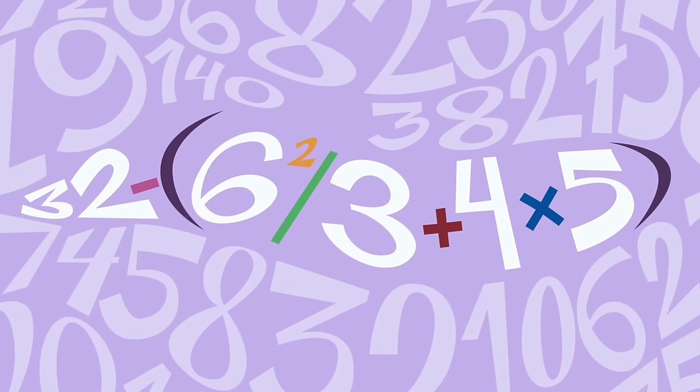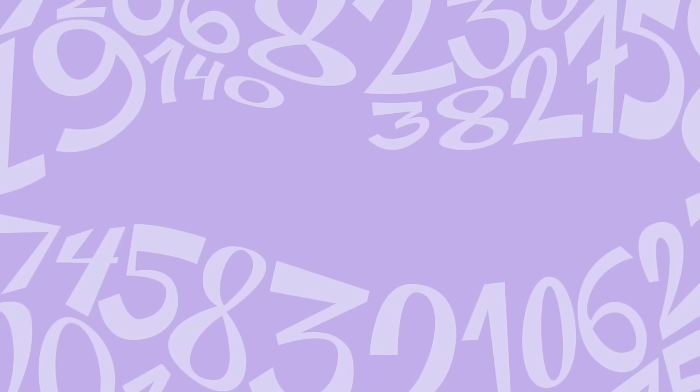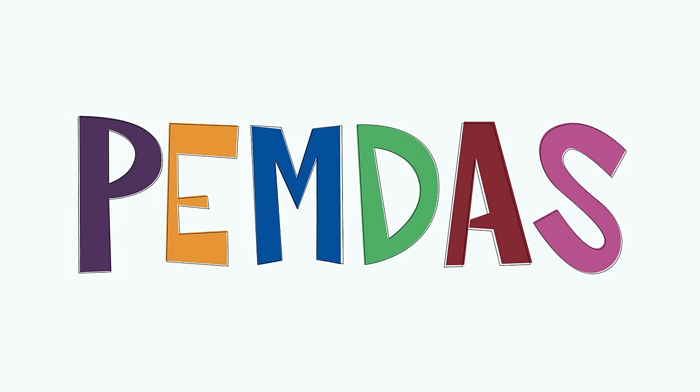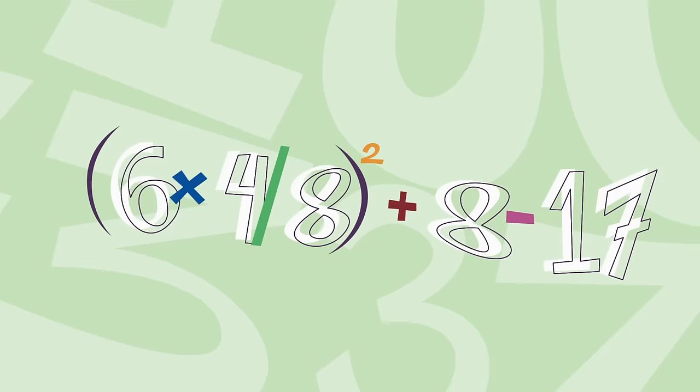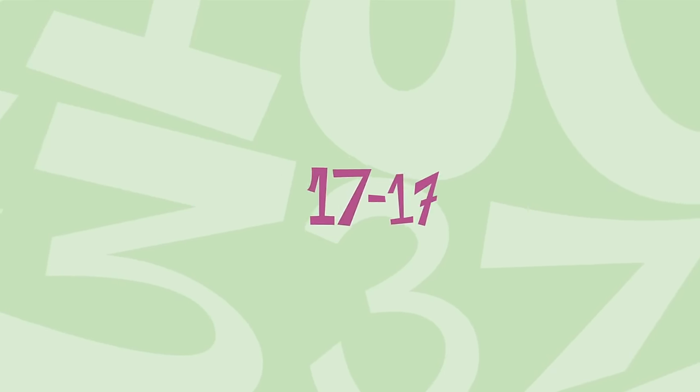Parentheses pointed and exponents took the lead. Then it was multiplication, division, addition, and subtraction, each in turn, always the same order. P-E-M-D-A-S. When they finished that set, they went to another, and another, always working inside the parentheses in PEMDAS order.